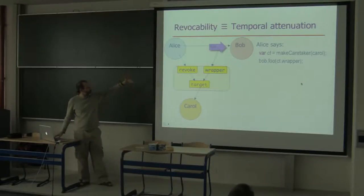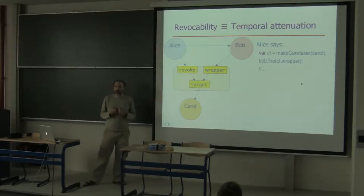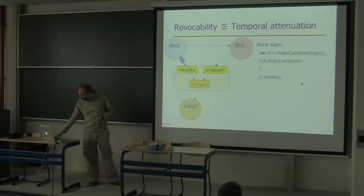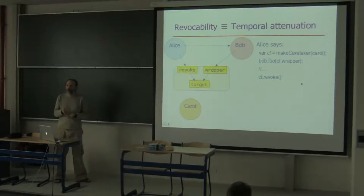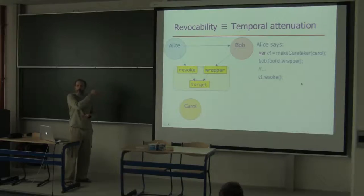Alice instantiates the caretaker, holds on to the revoke method, and gives Bob the wrapper. Bob can now use the wrapper — effectively using Carol's services — until Alice changes her mind. When Alice does change her mind, she invokes revoke, dropping the target variable. Bob still has unconditional full access to the wrapper forever, but the wrapper is now fully useless forever. The irrevocability of the primitive relationship did not prevent us from revoking what we were interested in revoking.